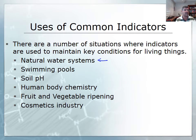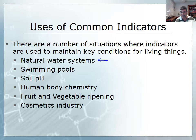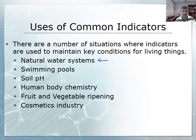Those organisms have very specific requirements for their pH in terms of survival and also the function of the enzymes and the chemicals within their bodies. So it's very important that the pH stays within a fairly narrow range, otherwise those organisms would not survive.